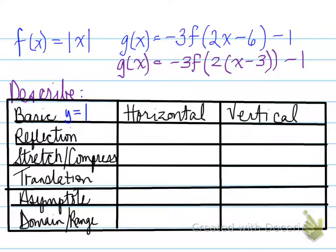This is a table to describe the transformation. So it's our description table. We have horizontal and vertical, and we definitely have all the other possibilities. Basic, reflection, stretch and compress, translation, asymptote, and domain and range. Going down, and this is going across. This is our description table.